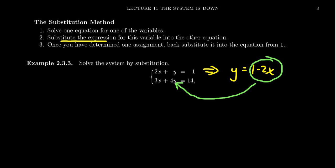And when we do that we'll end up with 3x plus 4, well instead of y I'm going to write 1 minus 2x equals 14. And this is why the substitution method gets its name. You're substituting out one of the variables with an expression from the other.